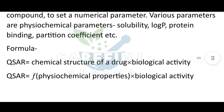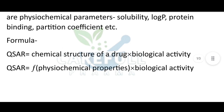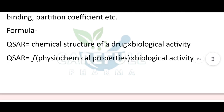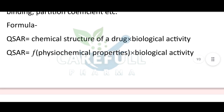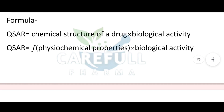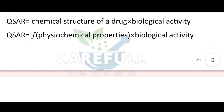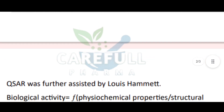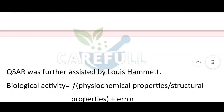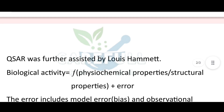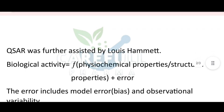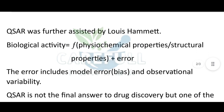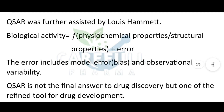Formula: QSAR = chemical structure of a drug / biological activity. QSAR = physiochemical properties / biological activity. QSAR was further assisted by Lewis Hammett. Biological activity = physiochemical properties / structural properties + error. The error includes model error, bias, and observational variability.